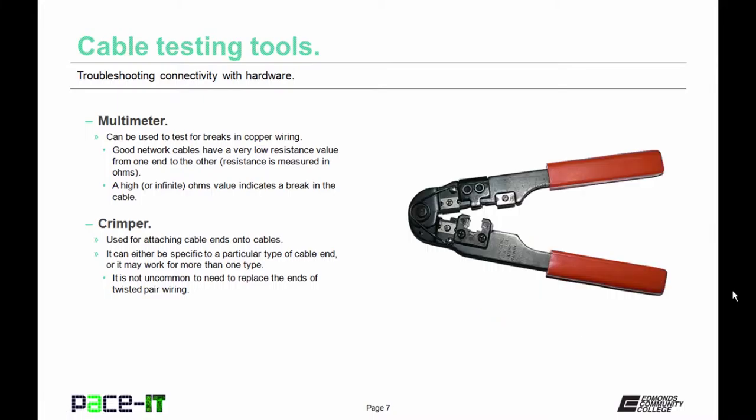Crimpers are not a testing tool per se, but they are used for attaching cable ends onto cables. If you suspect you have a bad cable end or a miswired connector, you're going to need a set of crimpers. It can either be specific to a particular type of cable end, or it may work for more than one type of cable. By the way, it's not uncommon to need to replace the ends of twisted pair wiring cables.